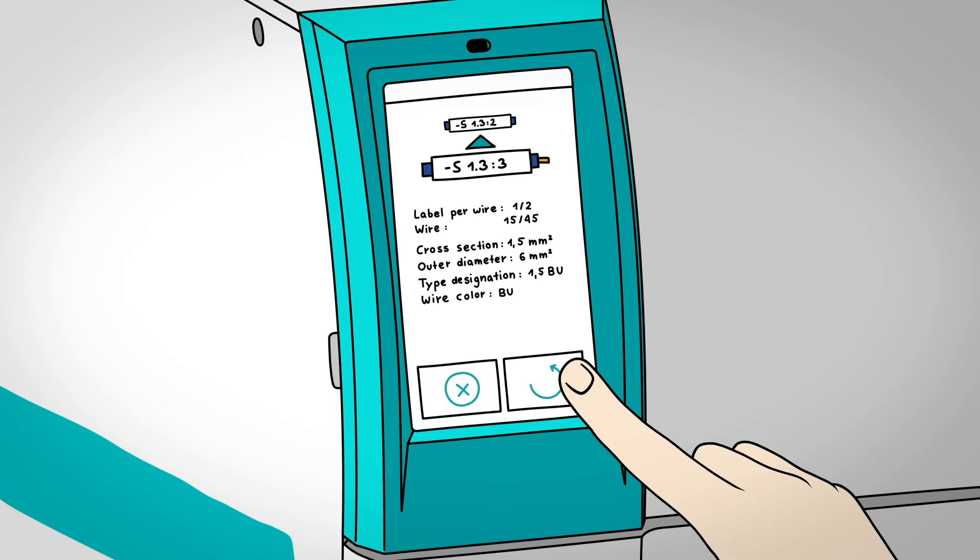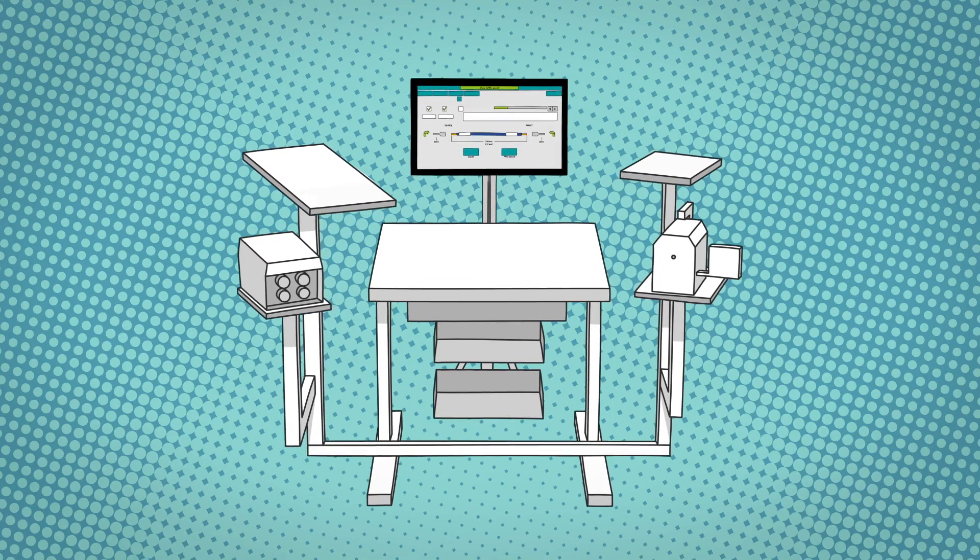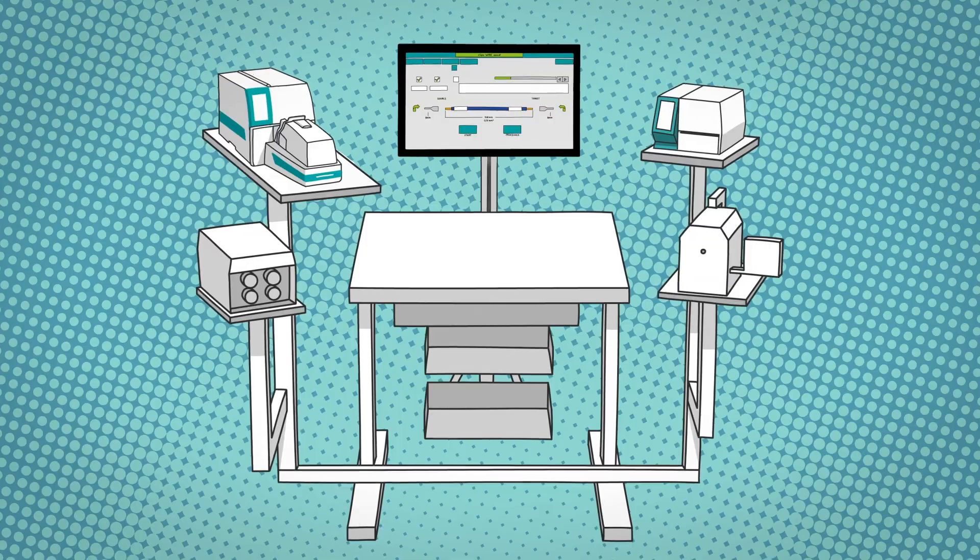This works directly at the control cabinet. In combination with the Thermomark E-Series devices, the ergonomically designed worker assistance system enables efficient and digitally supported wire processing.